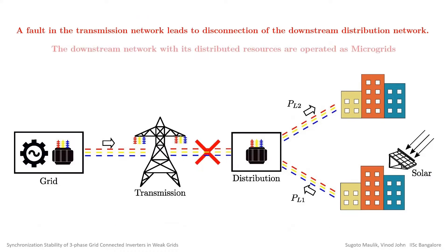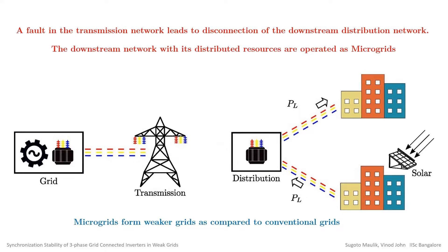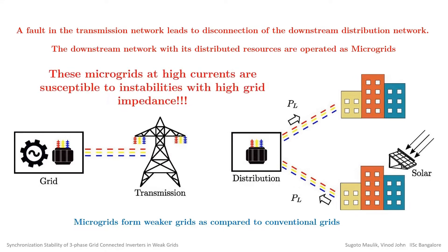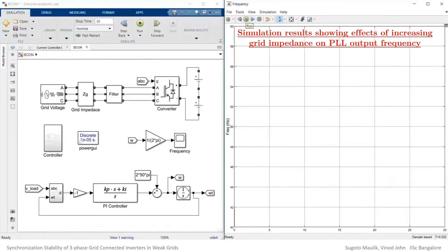These distributed resources have the advantage of being operated as microgrids when disconnected from the main grid due to a fault. However, these microgrids form weaker grids owing to their higher grid impedance and thus are susceptible to instabilities at high grid currents.